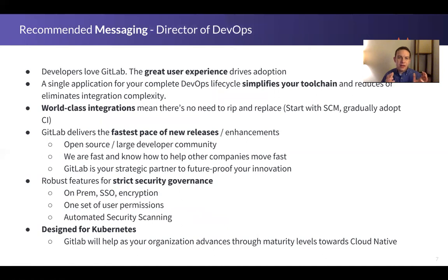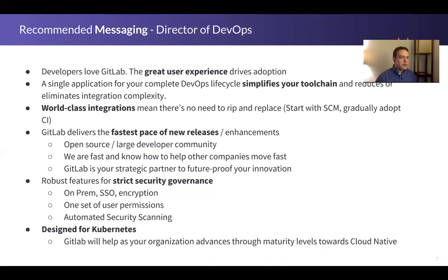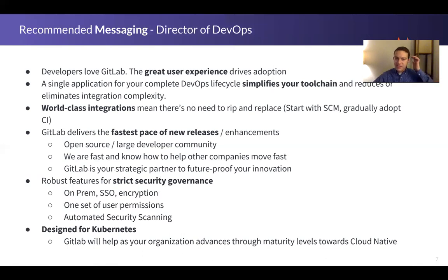So what can you tell somebody who's in a director of DevOps role about GitLab? Think about what this person is like, what they care about, what they're trying to accomplish, and play to that. Here's some recommended messaging. The first is that developers love GitLab. One of the pain points of the director of DevOps is that they want to drive adoption and manage new users coming in who may not like what's there. By and large, developers, operators, and folks that use GitLab love it — it has a great user experience, and it actually eases the drive of adoption. They care about standardization throughout the organization, and a great user experience is going to help drive that adoption and please their various constituents.